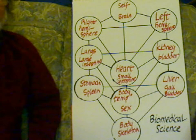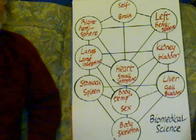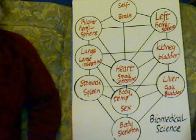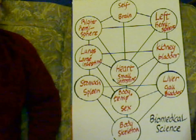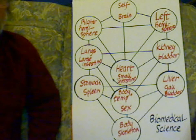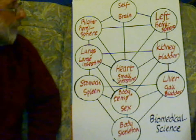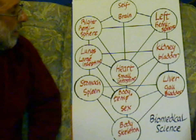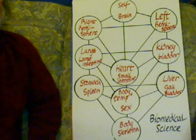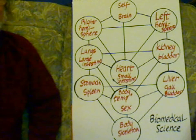Now we come on to the biomedical science which, at one fundamental level, is about the integration of the control system of the chromosomes — what is the structure, the control of the chromosomes. It is also about the differentiation of the cell into the different types of cell.